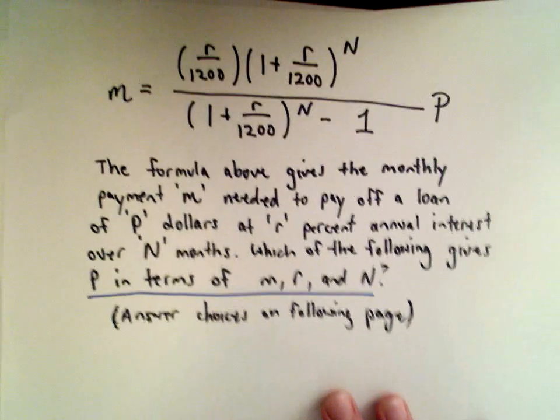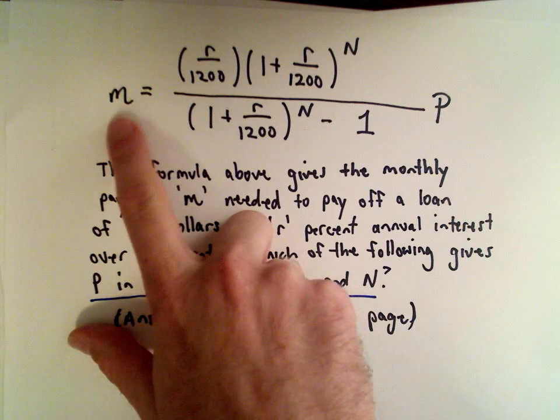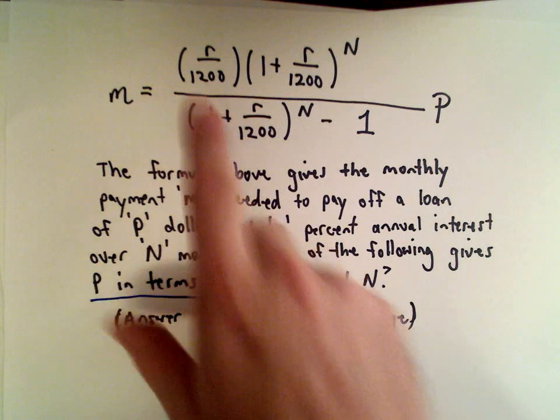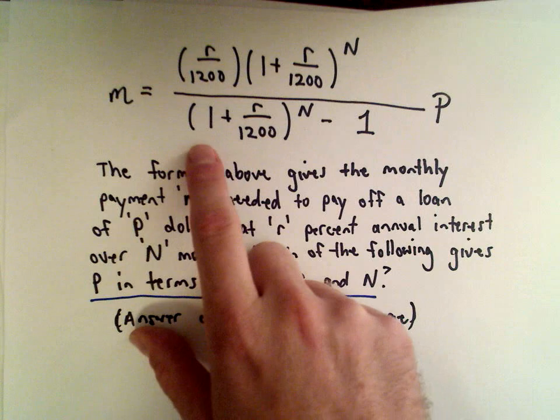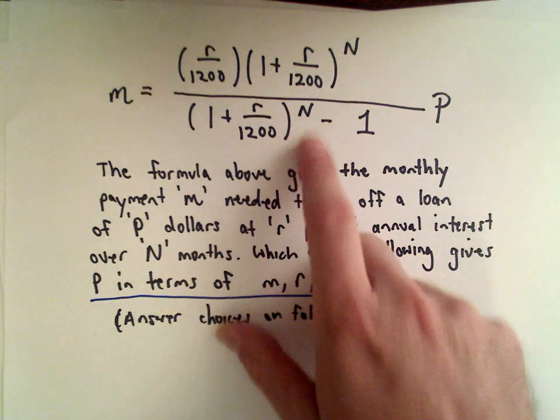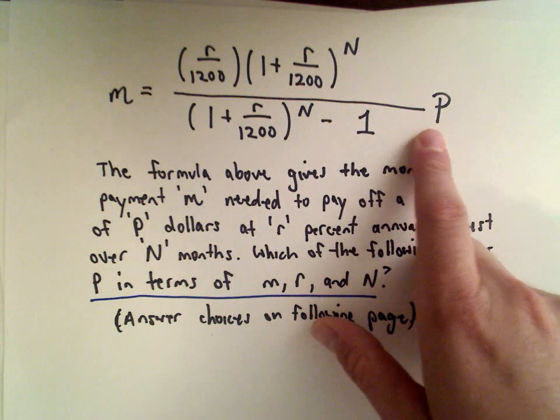Okay, in this example we've got this rather long formula here. M equals R divided by 1200 multiplied by 1 plus R over 1200 raised to the power of N divided by 1 plus R over 1200 raised to the power of N minus 1 multiplied by P.